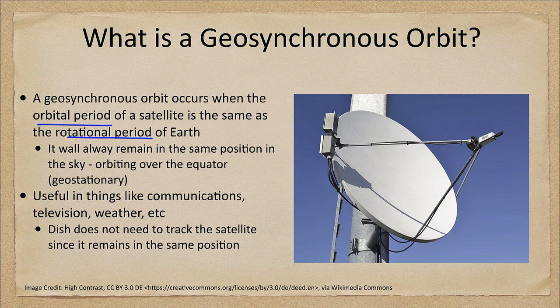Once a satellite dish is set up pointing at a geostationary satellite, you don't need to track the satellite. If you wanted to follow the International Space Station, you'd only get to see it for a short period when it was above your horizon, and the dish would have to move to track it. With something in geostationary orbit, it stays exactly in the same spot, so your dish can just point there without the complexity of tracking something moving across the sky.